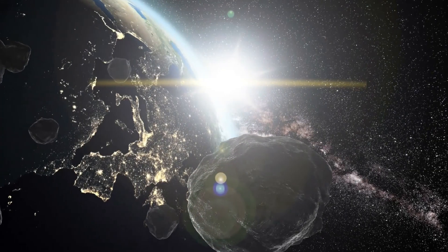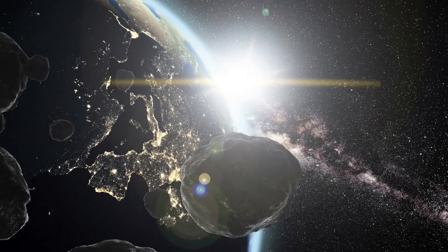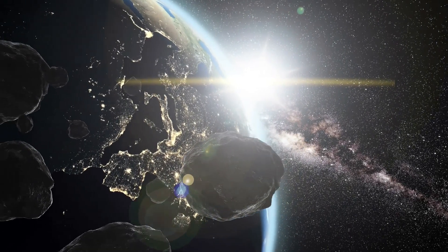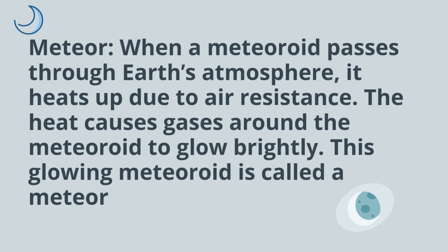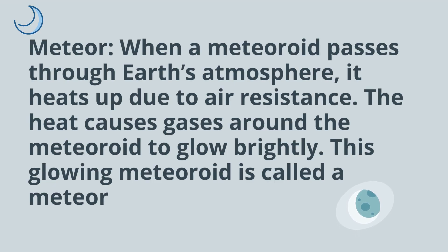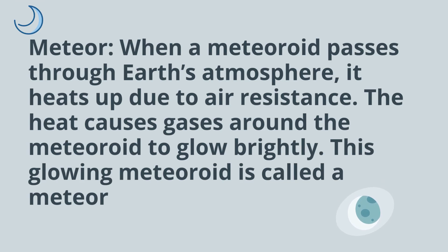When a meteoroid passes through the Earth's atmosphere, it heats up due to air resistance. The heat causes the gases around the meteoroid to glow brightly. This glowing meteoroid is called a meteor.